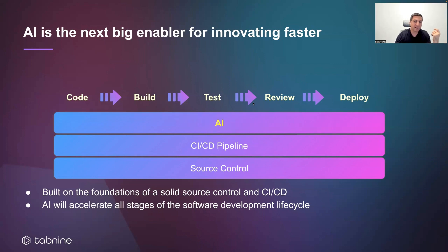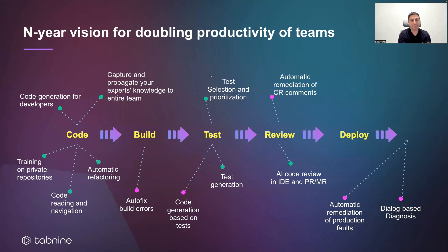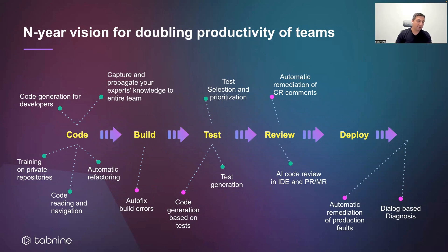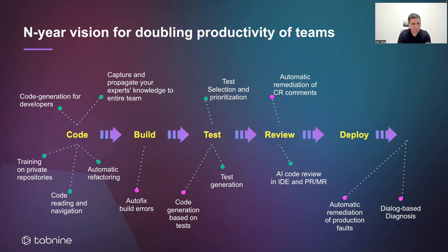I'd like to make that slightly more concrete by showing an end-year vision for doubling the productivity of teams. Generally speaking, the green points are things that we are either working on or others are working on and we think are attainable within the next 12 to 18 months. The purple ones are a little bit further down the road, although at least some research has been done on them and some results have been published. I'd like to describe some of the green points in more detail to make it more concrete.